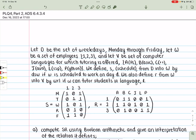For simplicity, we're just going to be using the first letter of each of those programming languages. We define S, the schedule, from D into V by DSW if W is scheduled to work on day D. We also define R from W into V by WRL if W can tutor students in language L. And we see those relations down below here.